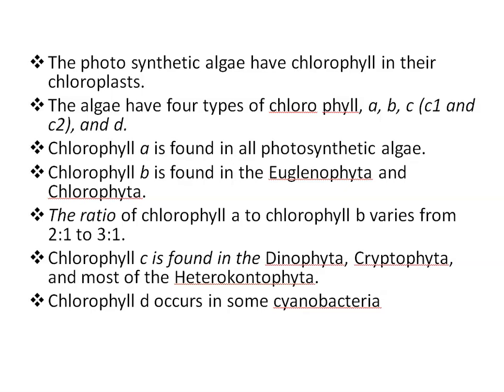Photosynthetic pigments in algae: photosynthetic algae have chlorophyll in their chloroplasts. Algae have four types of chlorophyll: chlorophyll A, B, C, and D. Chlorophyll A is the primary photosynthetic pigment in all photosynthetic algae and ranges from 0.3% to 3% of the dry weight. Chlorophyll B is found in euglenophyta and chlorophyta, and functions photosynthetically as a light-harvesting pigment, transferring absorbed light energy to chlorophyll A. Chlorophyll C is found in dinophyta, cryptophyta, and most of the heterokontophyta.